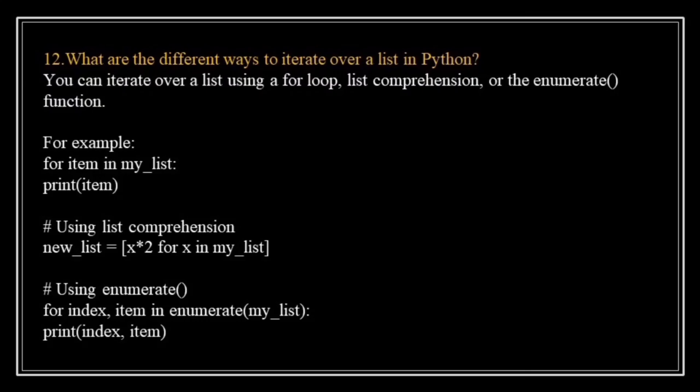You can iterate over a list using a for loop, list comprehension, or the enumerate function. For example, a for loop iterates over each item in my_list and prints the item. List comprehension provides a concise way to create a new list by applying an expression to each element in an existing list. In the example, my_list represents the original list, and the expression x * 2 is applied to each element x — the result becomes an element in the new list. The enumerate function pairs each element of a list with its index number. This loop iterates over my_list, providing both the index and the corresponding item.